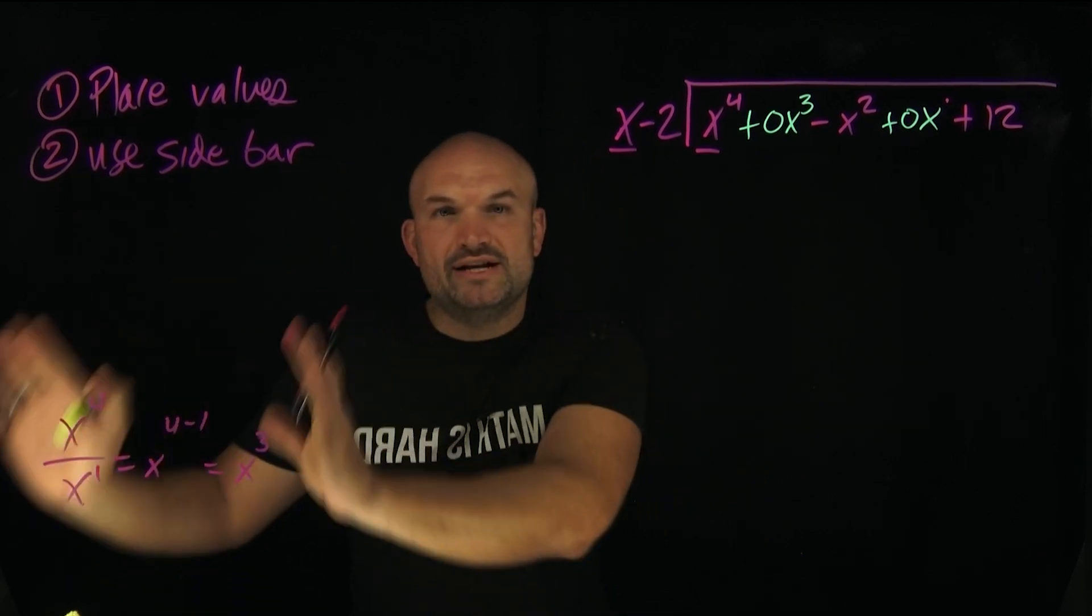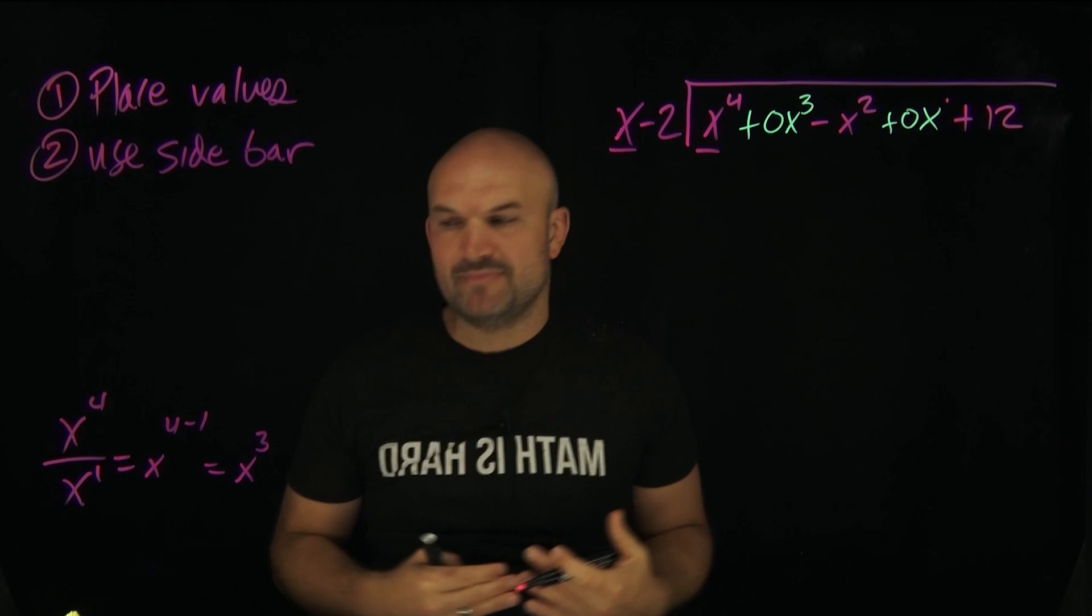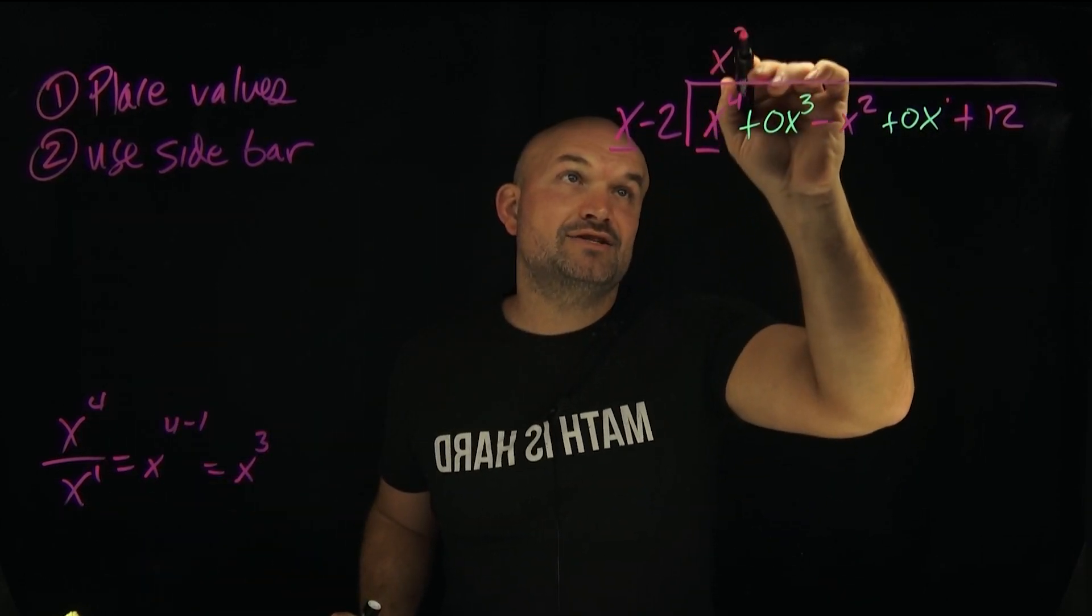So just use a sidebar. Write your work over there. Keep this for the long division algorithm. But if you have to do extra math, do it on the side. So x divides into x⁴, x³ times.